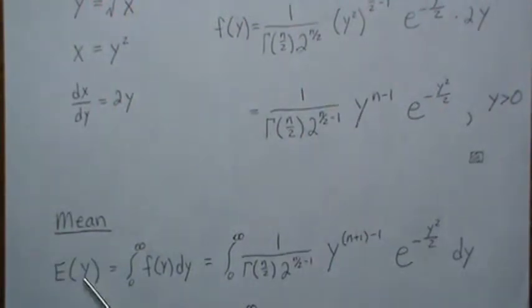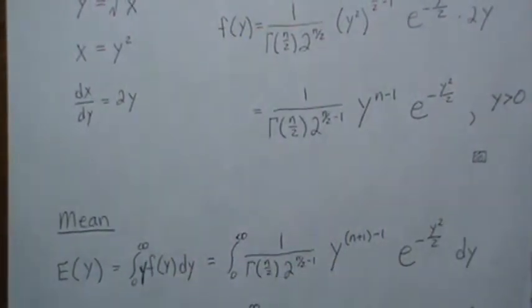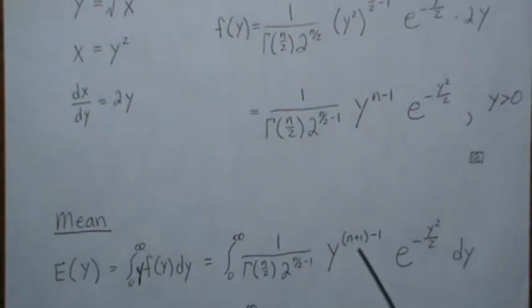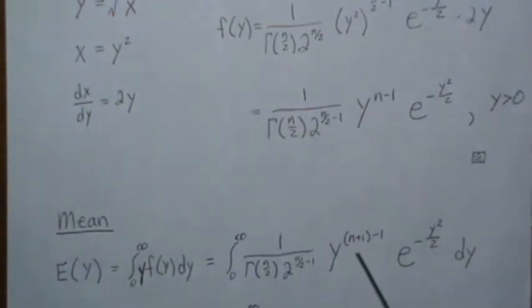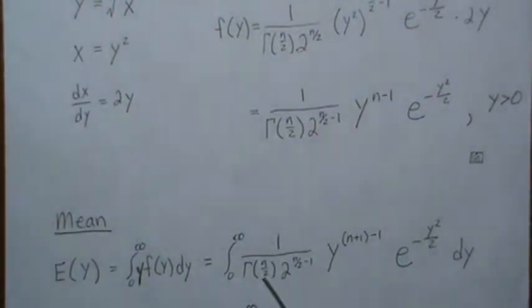Here we want to find the expected value of Y, which is Y times the density integrated over all possible values. We stick in a Y here—that's where the plus one comes, it's n plus one. If we had the right constants out here, this would integrate to one. Since these are constants with respect to the integral, we can take them out front.